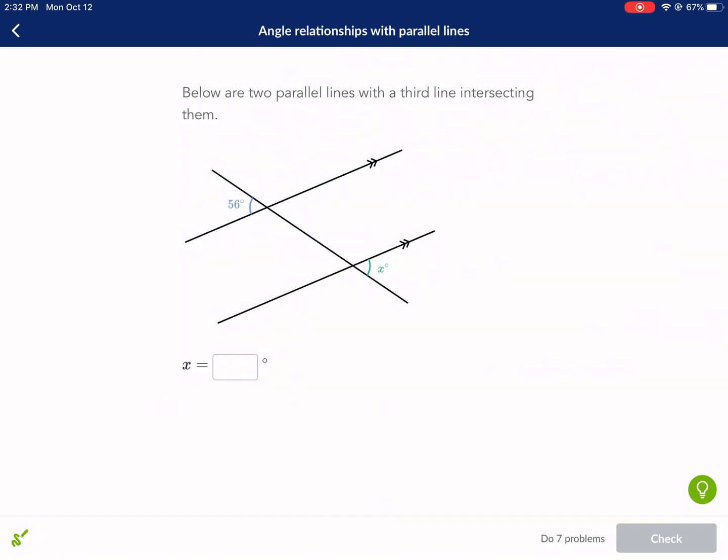Welcome everyone to another Khan Academy tutorial. Today we're doing angle relationships with parallel lines. Below are two parallel lines with a third line intersecting them.